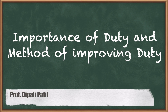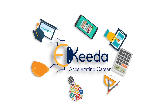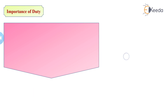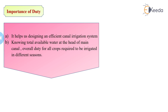Let's see how duty will be useful in designing various hydraulic structures. It helps us in designing an efficient canal irrigation system. If the duty is known, we can easily find out the optimum quantity of water passing through the canal. Also, if the discharge is known, we can find out the dimensions of the canal irrigation system and any hydraulic structure.